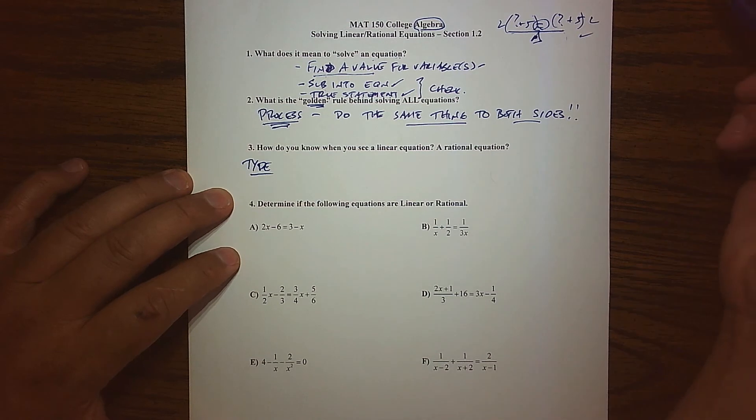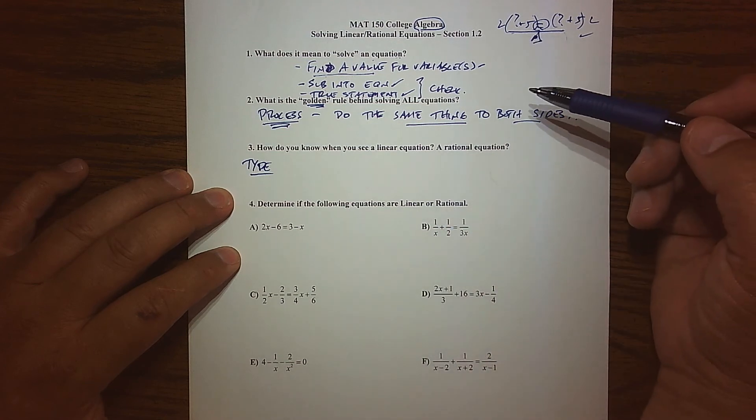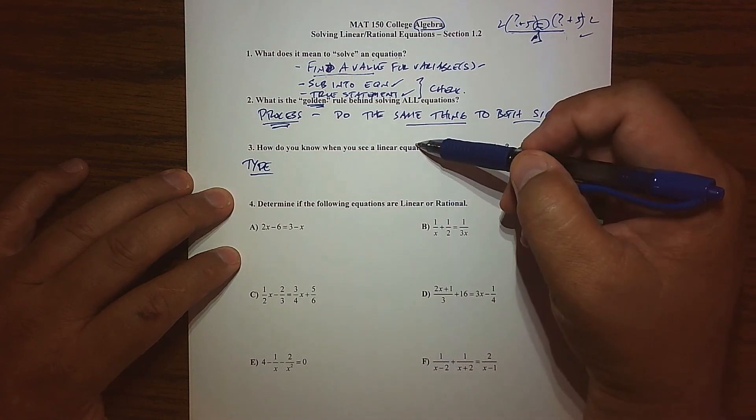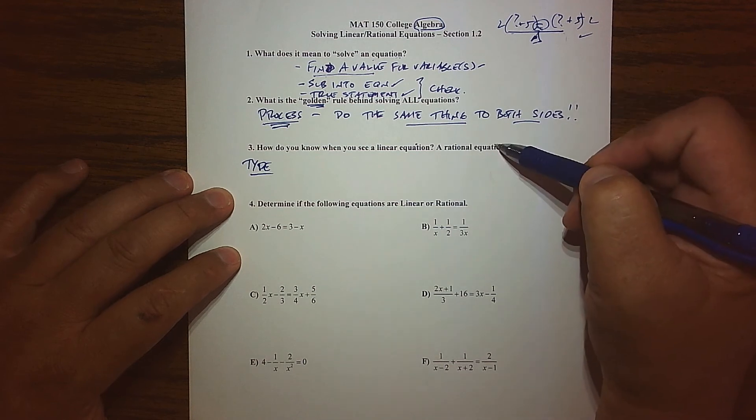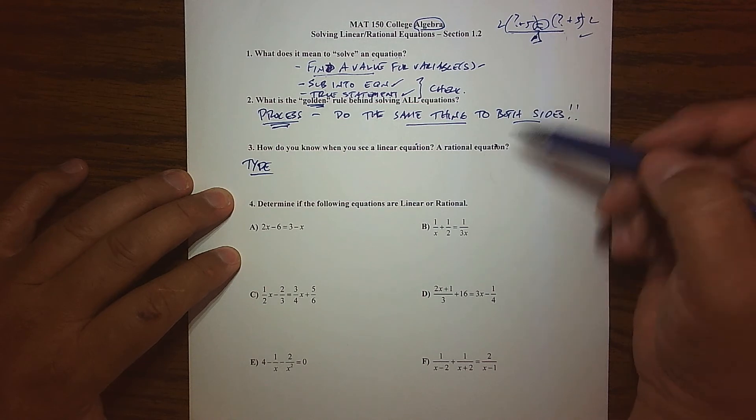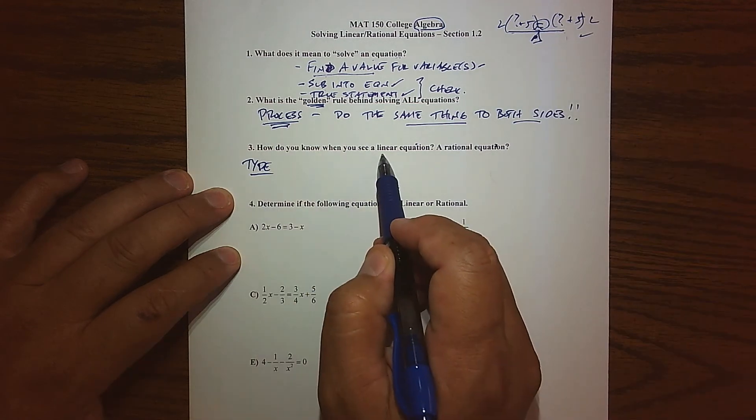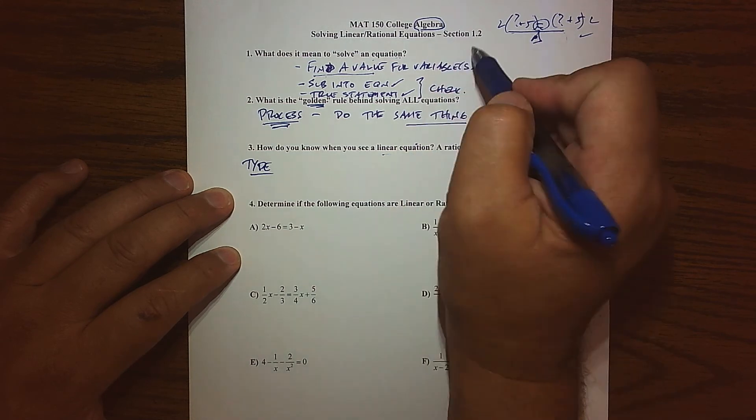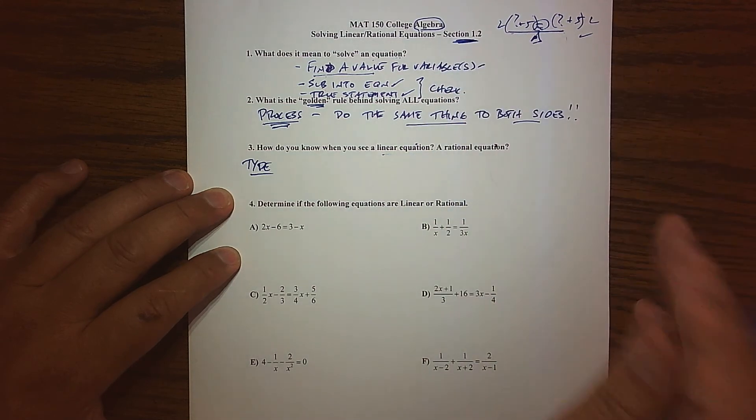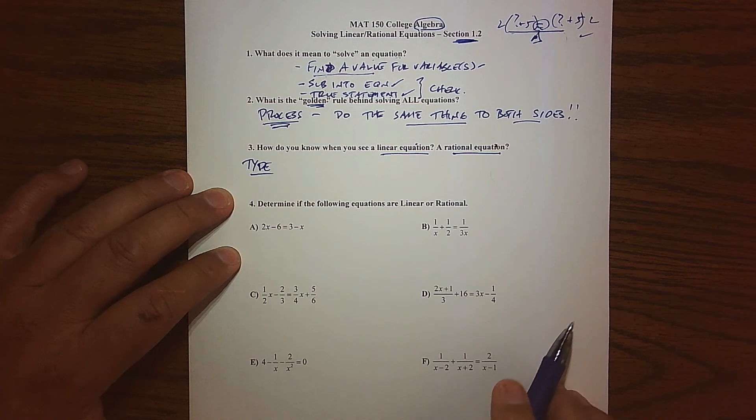Perhaps you guys have solved enough equations in your past. Do I use the quadratic formula? Can I just, how do I solve a linear equation versus a rational equation? Do I use factoring? There's a lot of tools that we pull out of our toolbox, and that depends on, well, what type of equation are we looking at? And so, in this section, 1.2, we're just going to consider two types of equations. One is a linear equation, and the other type is a rational equation.